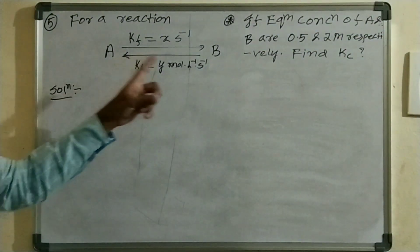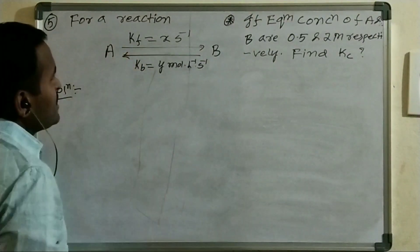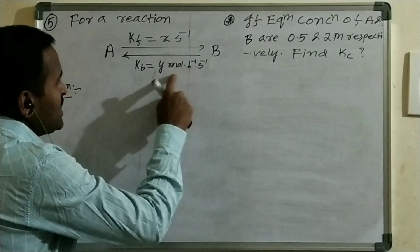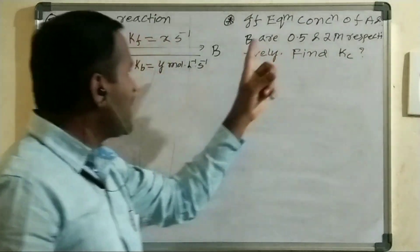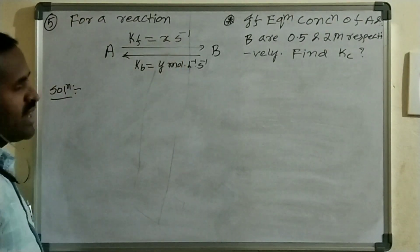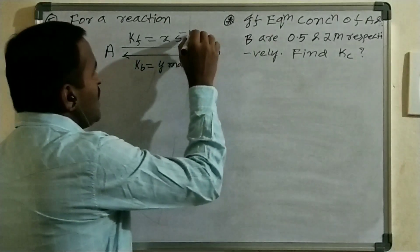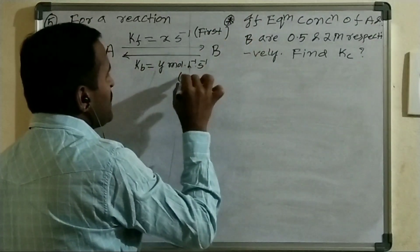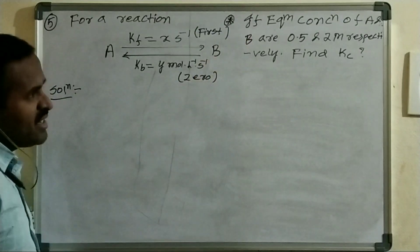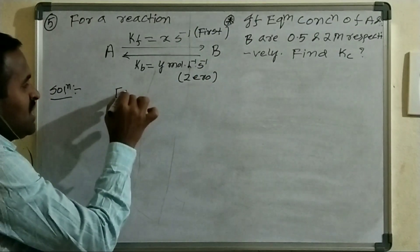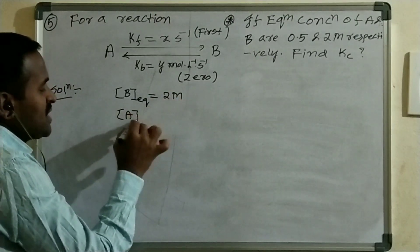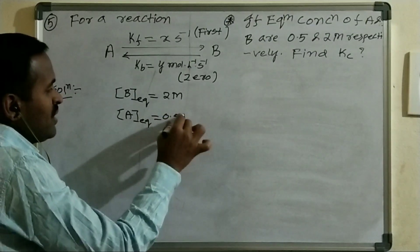Next problem: For a reversible reaction A ⇌ B, the rate constant for the forward reaction Kf = X s⁻¹ and for backward Kb = Y mol/L/s. Equilibrium concentrations of A and B are 0.5 M and 2 M respectively. Find the equilibrium constant. From the units, the forward reaction is first order and the backward reaction is zero order.